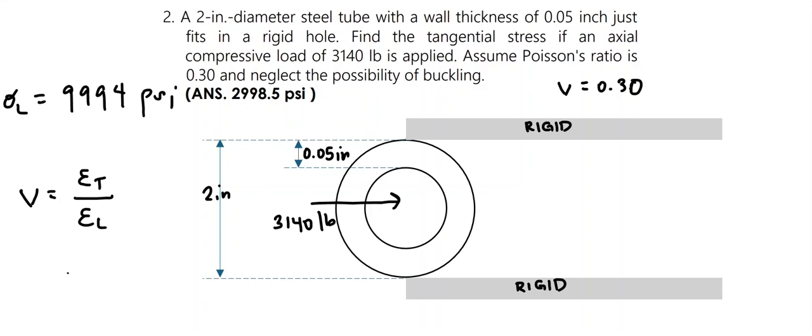Knowing that strain equals stress divided by the modulus of elasticity, and since the steel is the same material throughout, we can cancel E. Therefore, Poisson's ratio equals the tangential stress divided by the longitudinal stress.